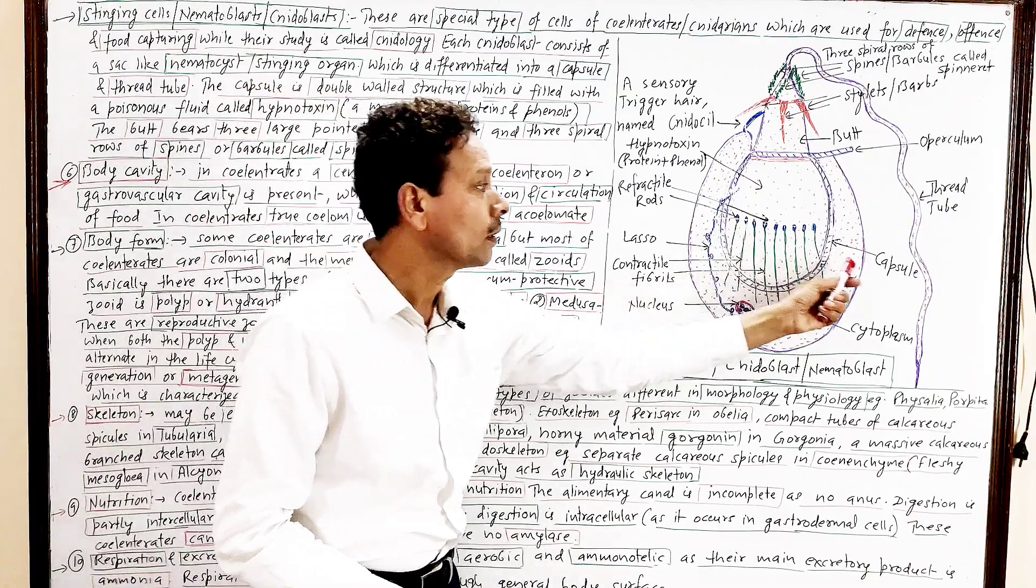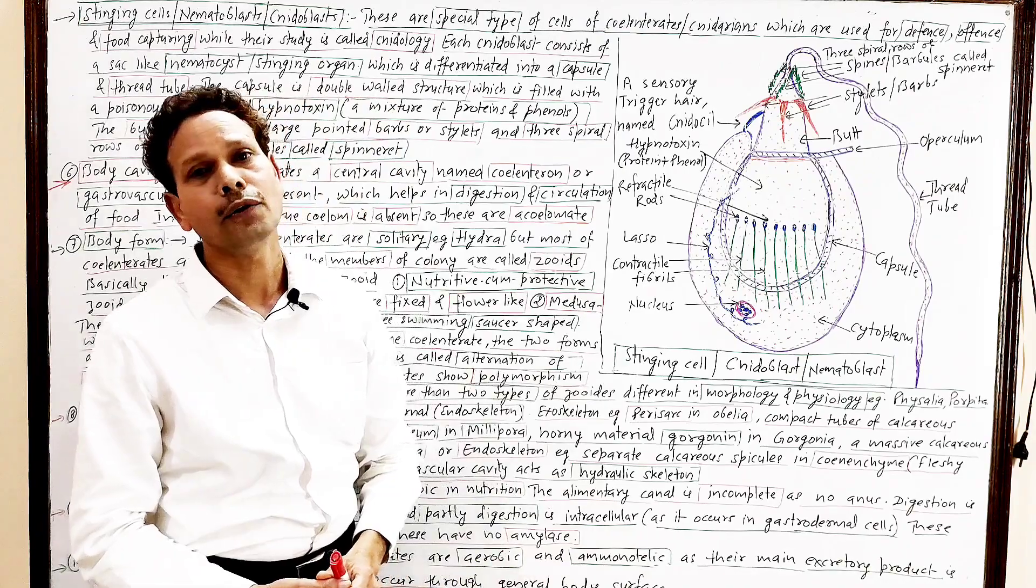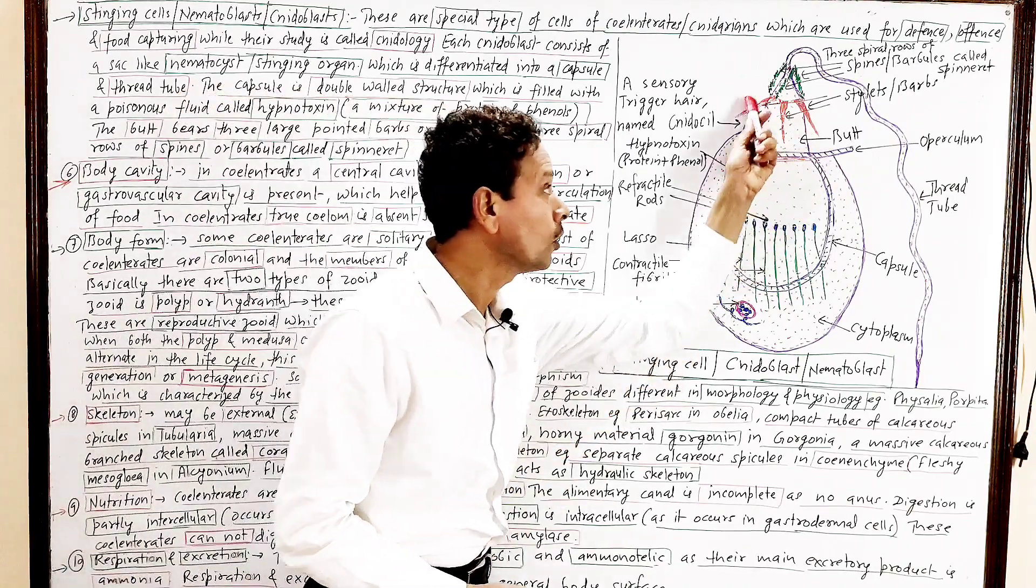And this elongated thread-like structure, that is thread tube. The basal part of this thread tube, which is named butt or shaft.